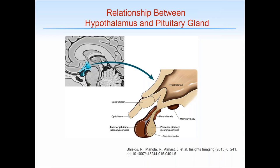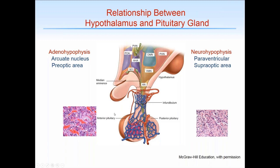Here we see the adenohypophysis, or anterior pituitary gland — a highly secretory gland with a large blood supply and complex portal circulation. It's a very heterogeneous tissue with both acidophilic and basophilic cell types. Over here we see the posterior pituitary, a more classic-looking neural tissue. This demonstrates the complex vascular system that aids the pituitary, including direct arterial connection between the posterior and anterior pituitary and the infundibulum.